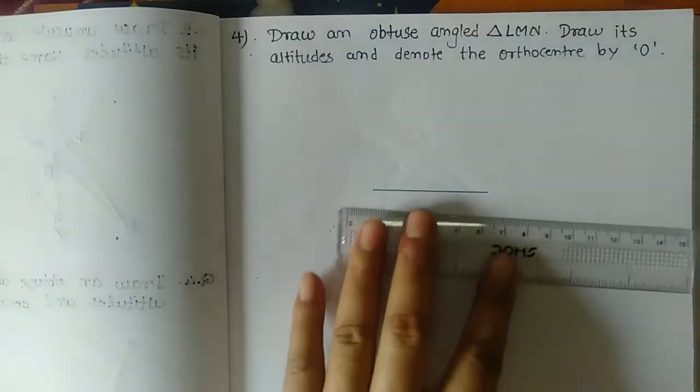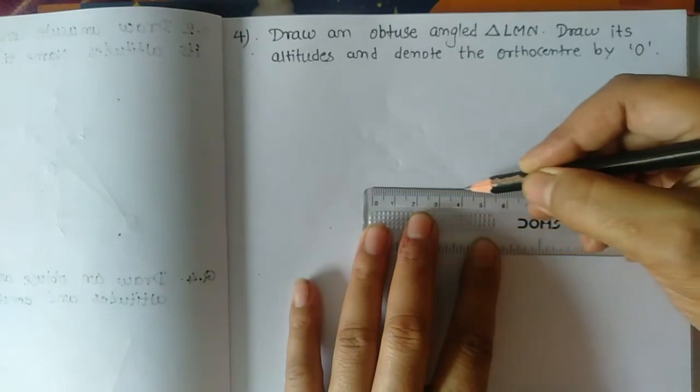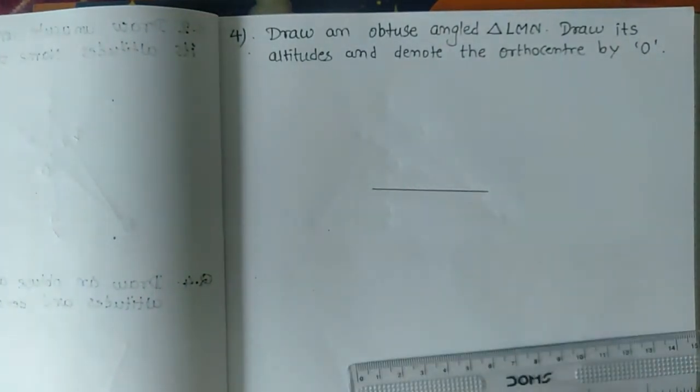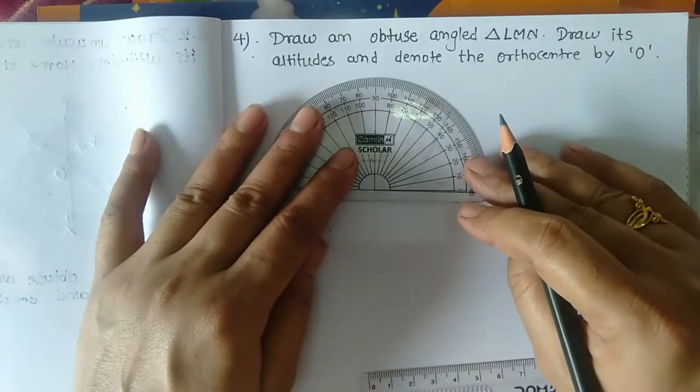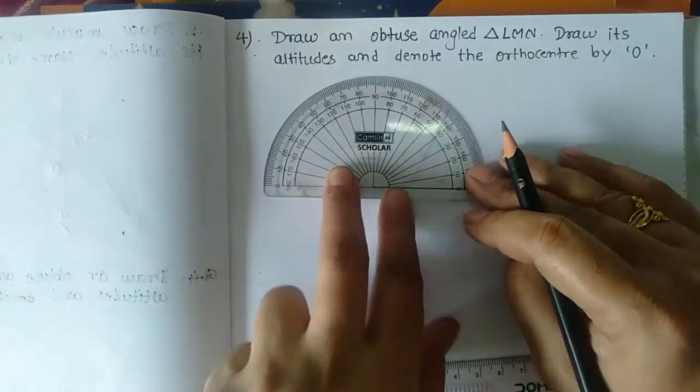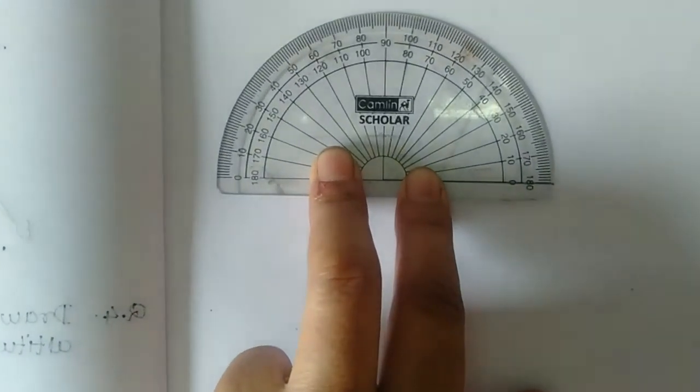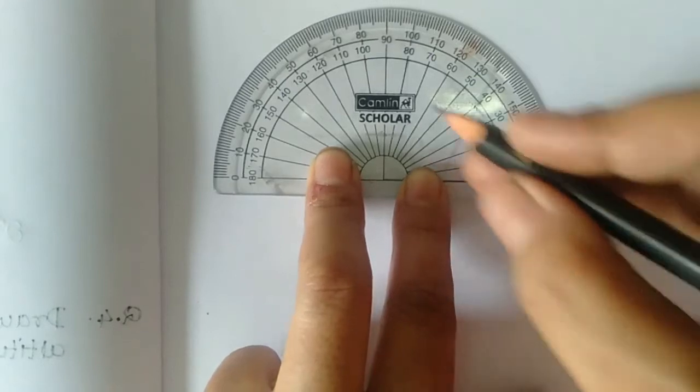First, draw the base line. We know what is meant by obtuse angled triangle: if the measure of any one angle in the given triangle is greater than 90 degrees, then that triangle is called an obtuse angled triangle.